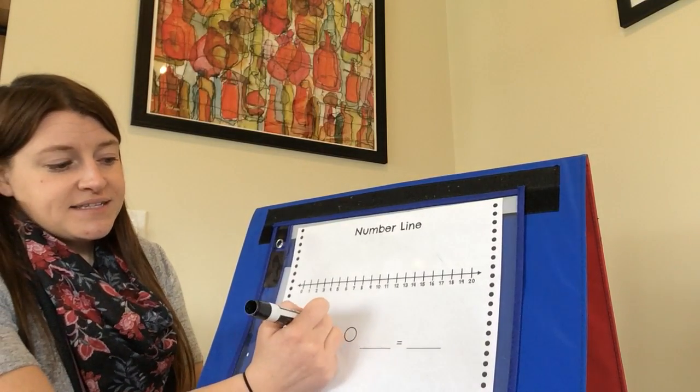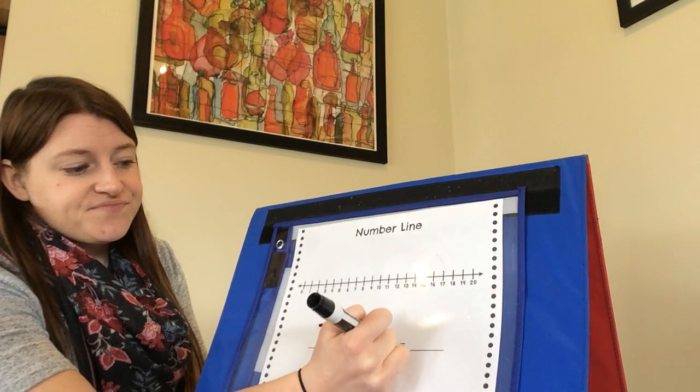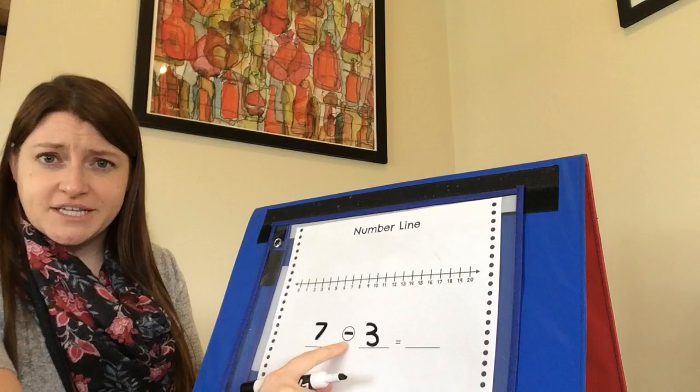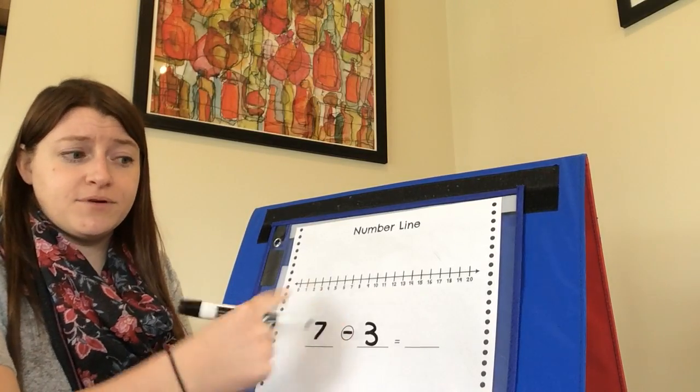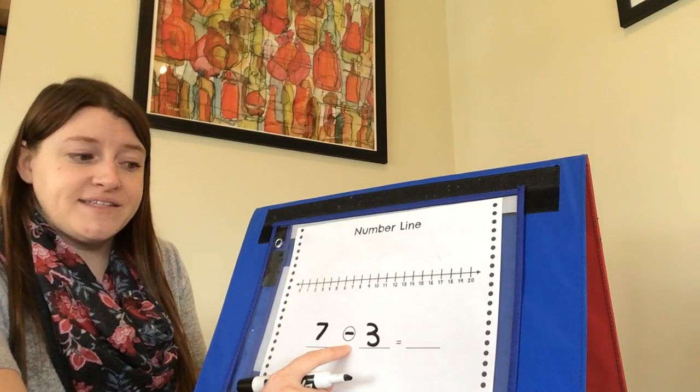Let's start by doing seven minus three. Remember that circle is there because sometimes we might solve addition problems using this number line page. Right now we're doing subtraction, so you have to practice writing a minus sign.